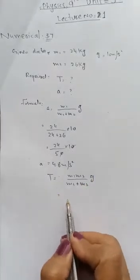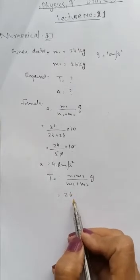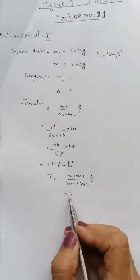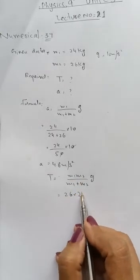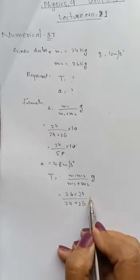Now putting the values. m1 is 26, m2 is 24, divided by 26 plus 24, into g.